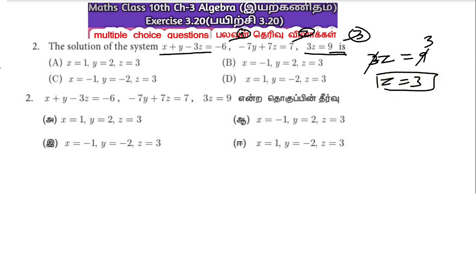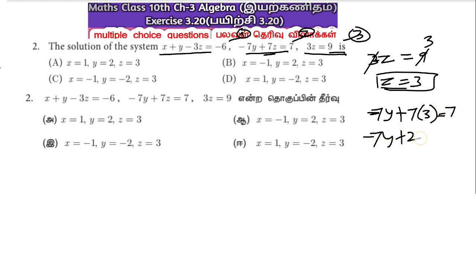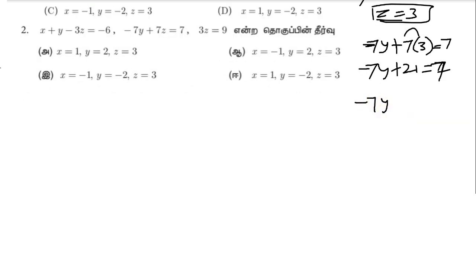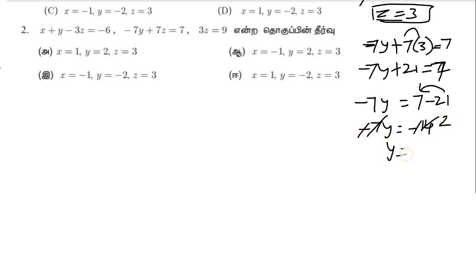Now, equation number 2 is solved. Equation 2 gives minus 7y. Then, minus 7y plus 21 — since 7×3 is 21. Equation 3 substituted: minus 7y equals 7 minus 21. Then minus 21 plus 7 gives minus 14. So, minus minus cancels — 2×7 is 14 — y equals 2.